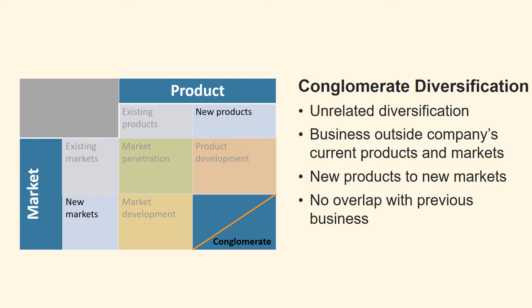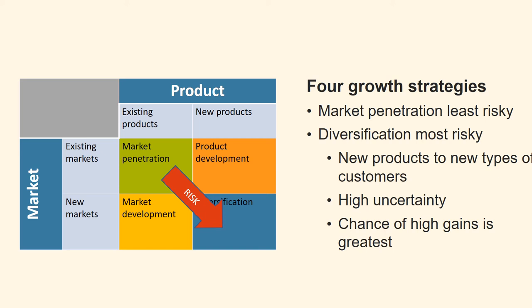Conglomerate diversification, also called unrelated diversification, is a strategy for company growth through starting up or acquiring businesses outside the company's current products and markets. The company enters new business areas that do not overlap with existing products — it is a completely new area with another industry and other competitors. This is the most risky of all strategies. When we look at the four strategies, it is obvious that market penetration strategy is the least risky, as the company tries to sell more of the same products to the same customers.